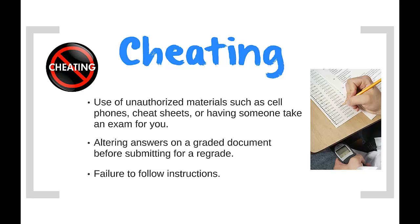Cheating includes, but is not limited to, the use of unauthorized materials or study aids in any academic exercise, which gives an unfair advantage to the student. Cheating also includes the alteration of any answers in a graded document before submitting it for regrading. Furthermore, cheating can be the failure to observe the express procedures or instructions of an academic exercise. Students tend to find themselves in these types of situations, so let's take a look at scenario one.